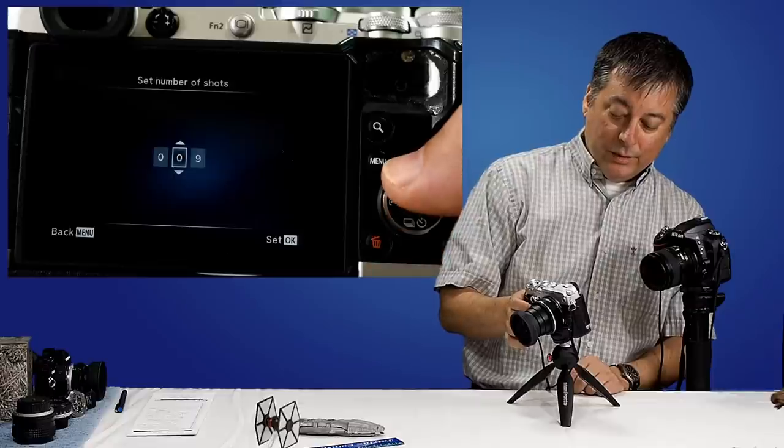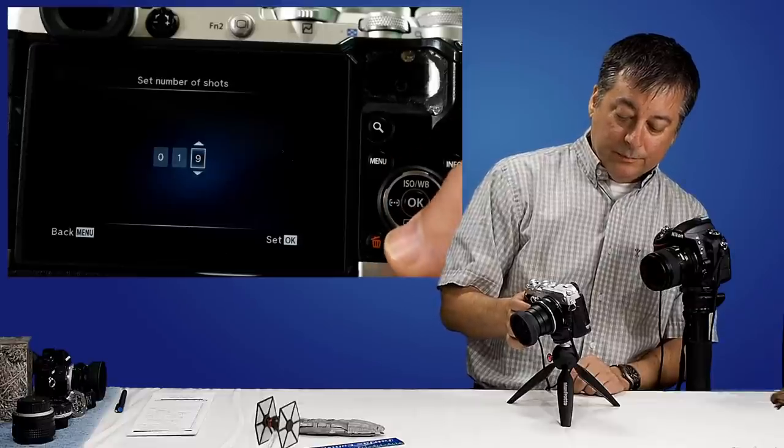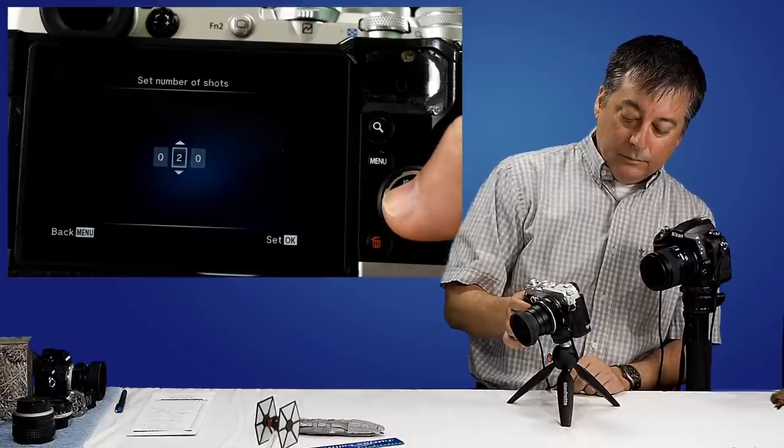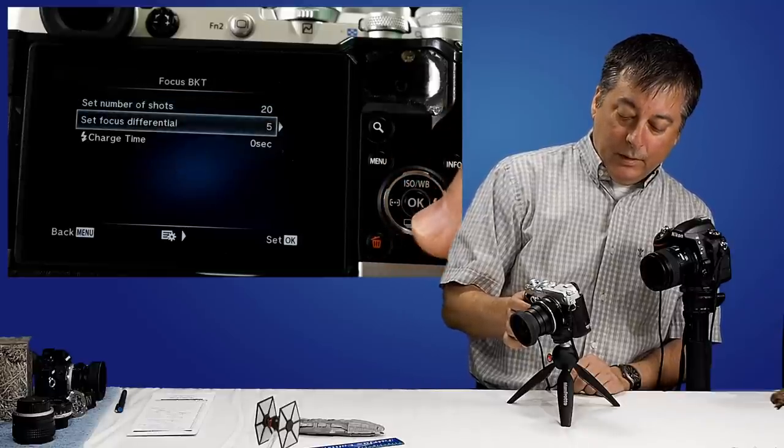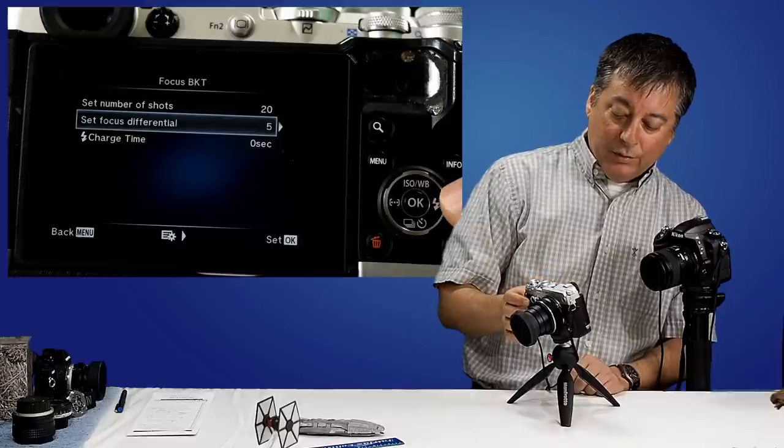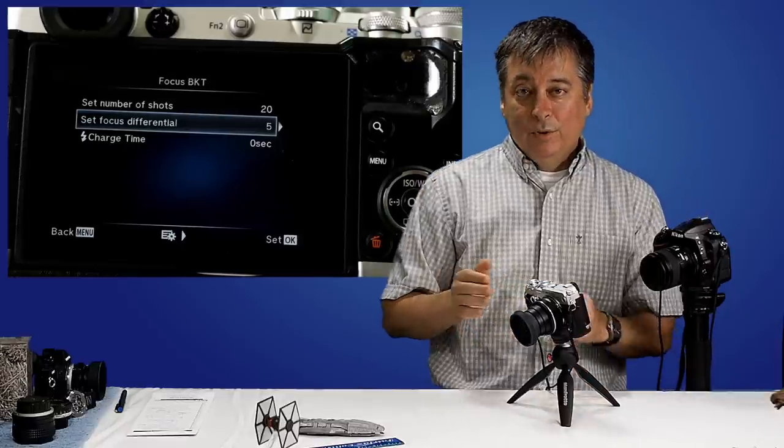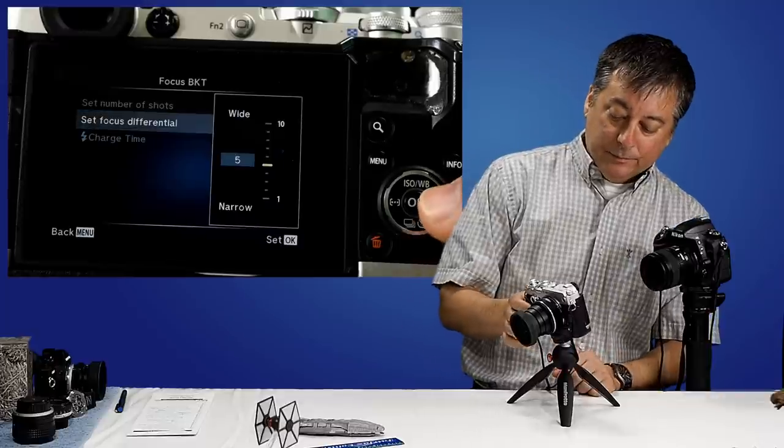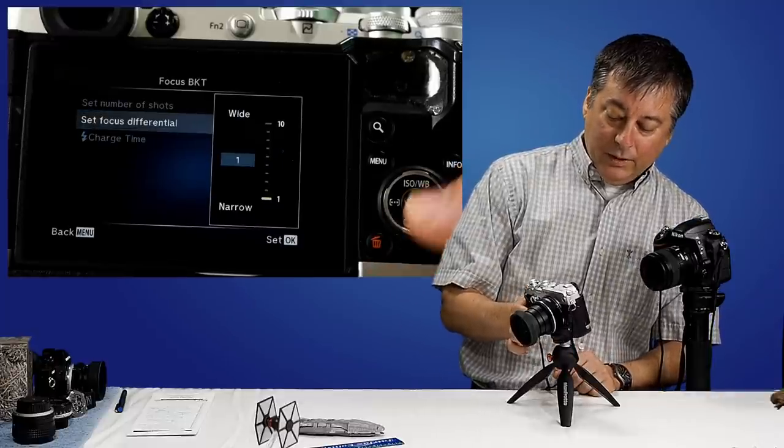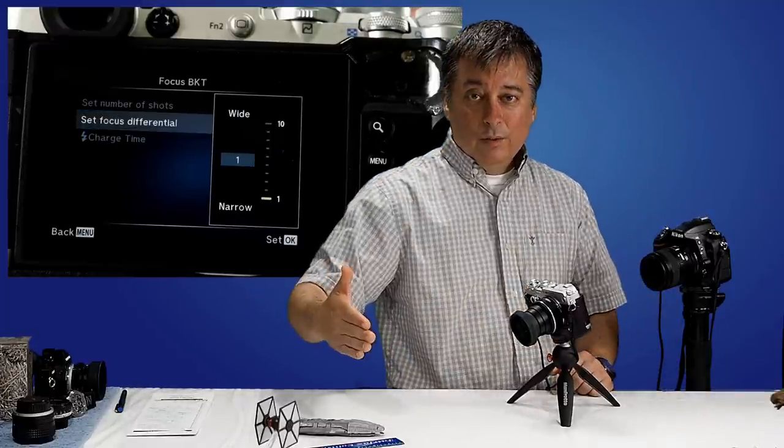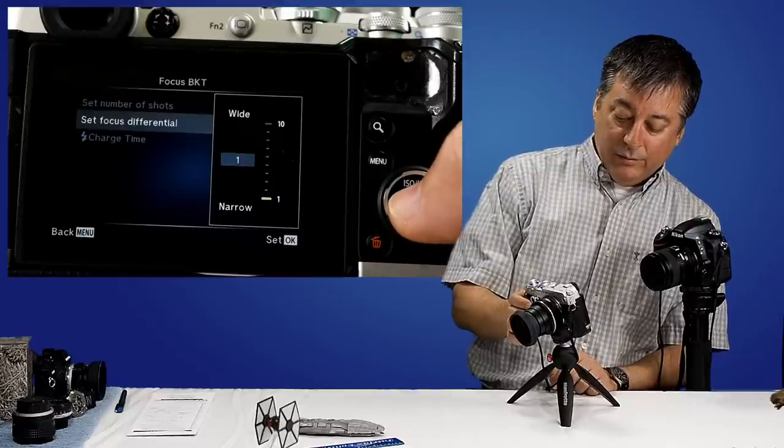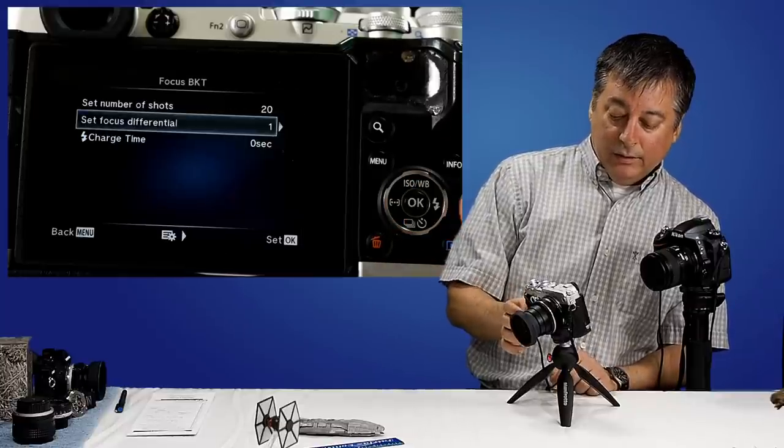This is where we can set the number of shots we want to take. I'm going to set this to 20. And then this is the focus differential, meaning how much do you want it to change focus from one picture to the next. Because this scene is relatively small and close up, I'm going to set this to the narrowest difference in focus.